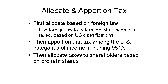First, at the CFC level, income taxes are allocated to income on which foreign law imposes the tax. The income and tax amounts are determined under U.S. tax law, but the incidence of tax must be analyzed under the foreign law. Where a particular foreign income tax is imposed on both 951(A) and other income, the tax must be apportioned based on the ratio of 951(A) net income to total net income, both determined under U.S. principles.